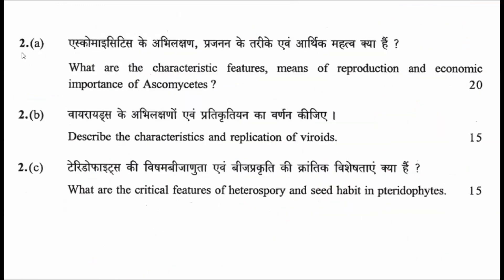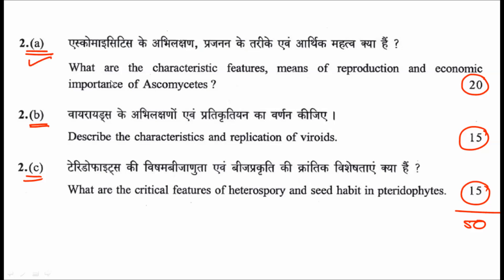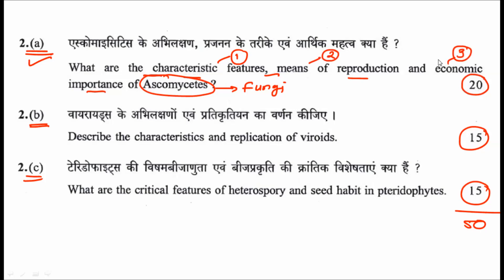Question two is divided into three parts — A, B, and C — carrying 20, 15, and 15 marks respectively, totalling 50. The first sub-question asks for the characteristic features, means of reproduction, and economic importance of Ascomycetes. You have to answer in three phases: first, characteristic features; second, means of reproduction; third, economic importance. Elaborating all three phases will get you the full 20 marks.